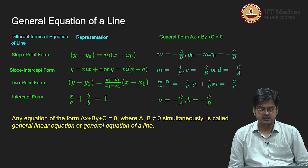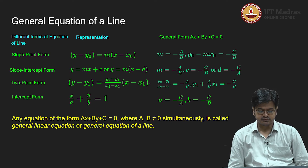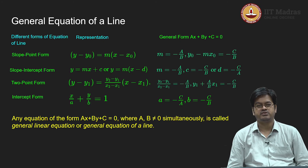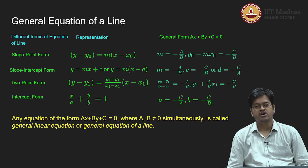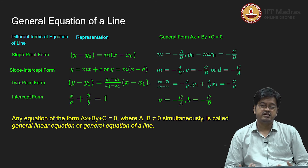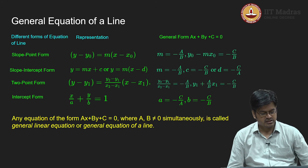So now we bring up the definition: any equation of the form ax plus by plus c equals 0, where a and b are not simultaneously equal to 0 (individually they can be zero or non-zero), is called a general linear equation or general equation of a line. What we are summarizing is: a general linear equation in two variables gives you a line — this is the identification of the geometric object called a straight line with the algebraic representation of a general linear equation.